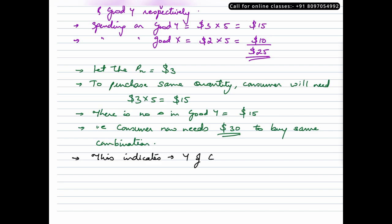So why do we need to raise the income of the consumer? Because the real income of consumer has gone down due to a rise in the price of commodity X.